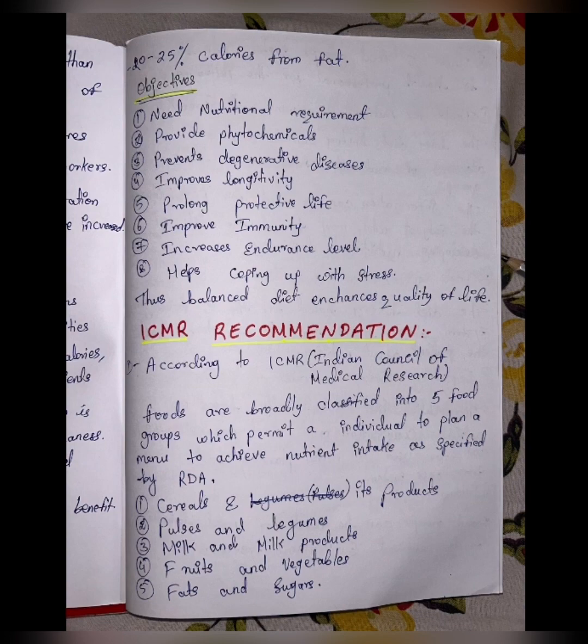The 5 food groups are: Group 1 — Cereals and its products like flour, oats, rice, etc. Group 2 — Pulses and legumes like beans, lentils, and peas.